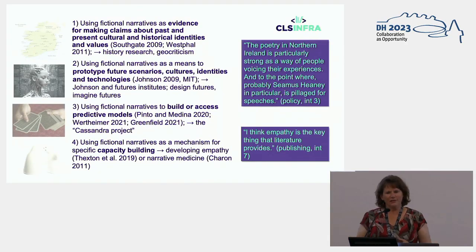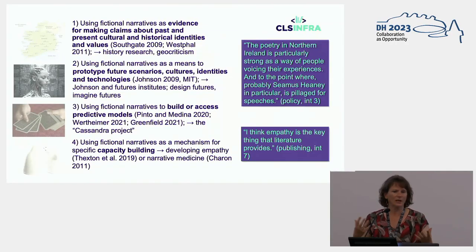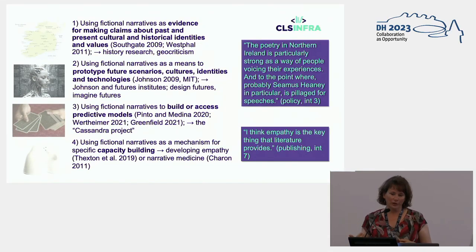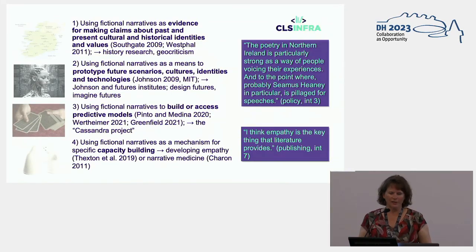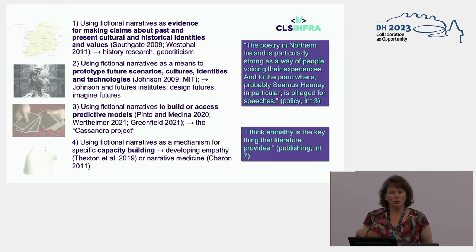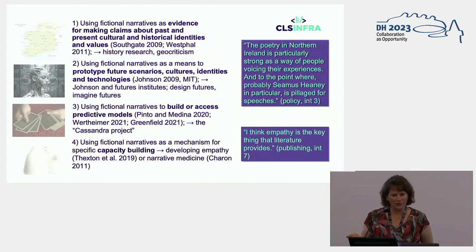From all these examples, we found four models appearing again and again. First, using fictional narratives as evidence for making claims about past and present cultural and historical identities — so history research, geocriticism, a lot of this in geography. Second, using fictional narratives as a means to prototype future scenarios, cultures, identities, and technologies — so futures institutes, design futures, imagined futures.